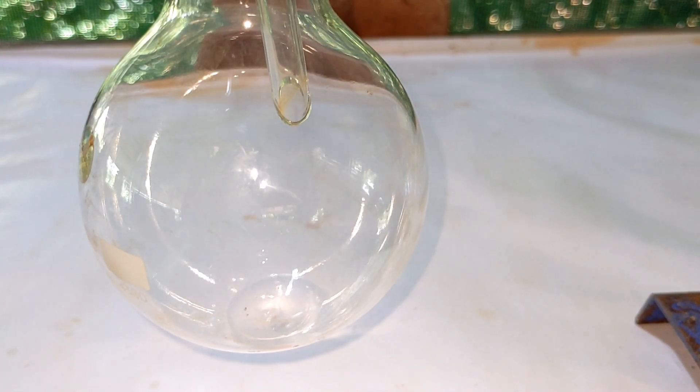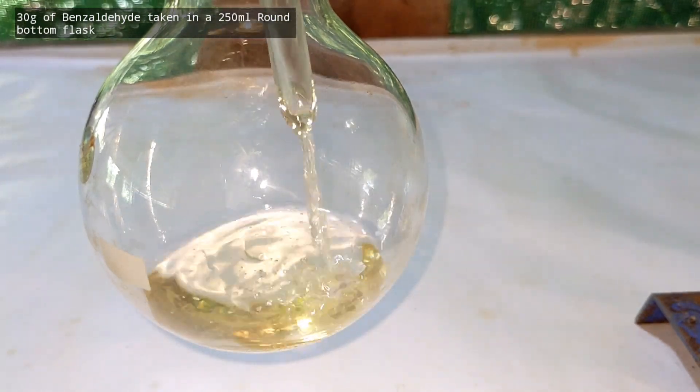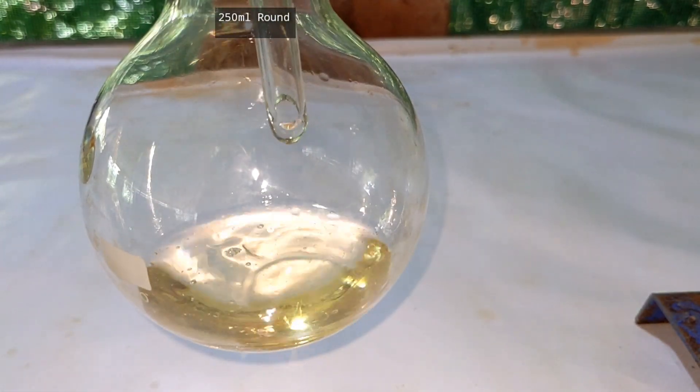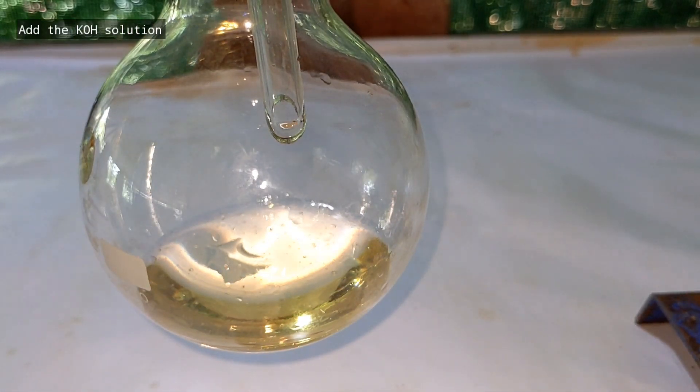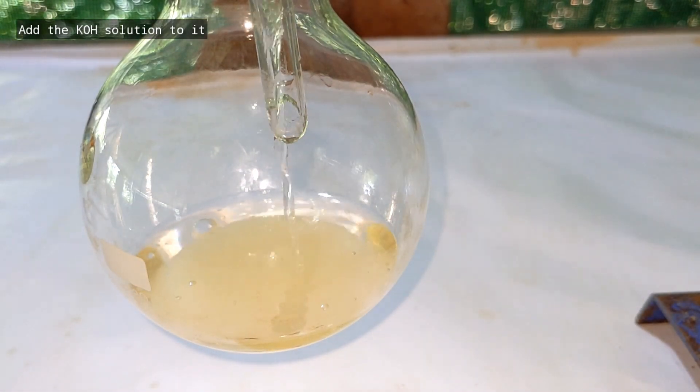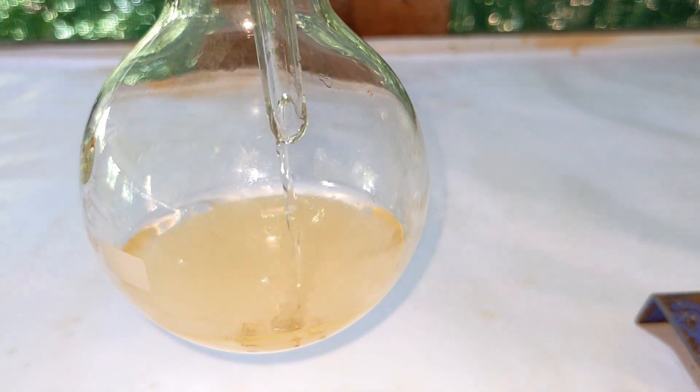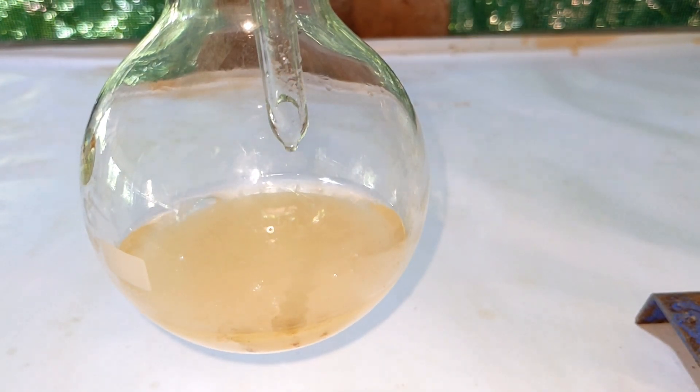Now a 250 ml round bottom flask was clamped on a stand and into it was added 30 grams of freshly distilled benzaldehyde. Then the highly concentrated potassium hydroxide solution was added to it. After adding the potassium hydroxide, the flask was shaken vigorously to make a uniform suspension inside the flask.